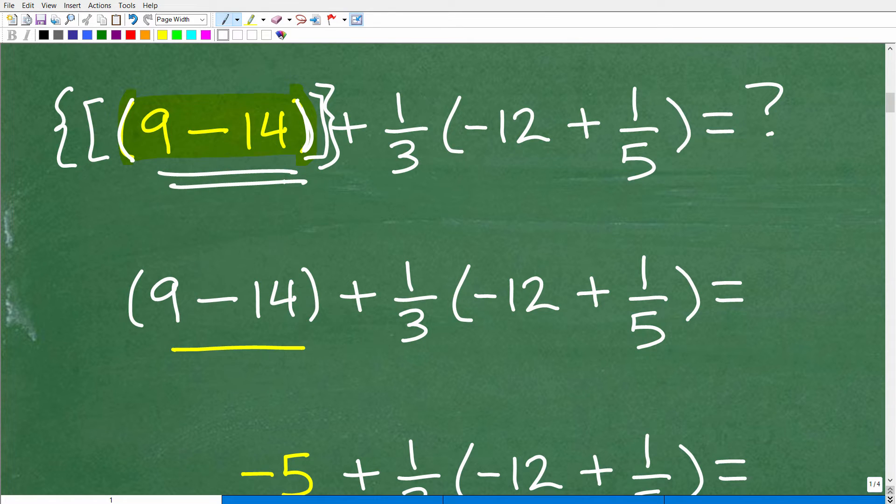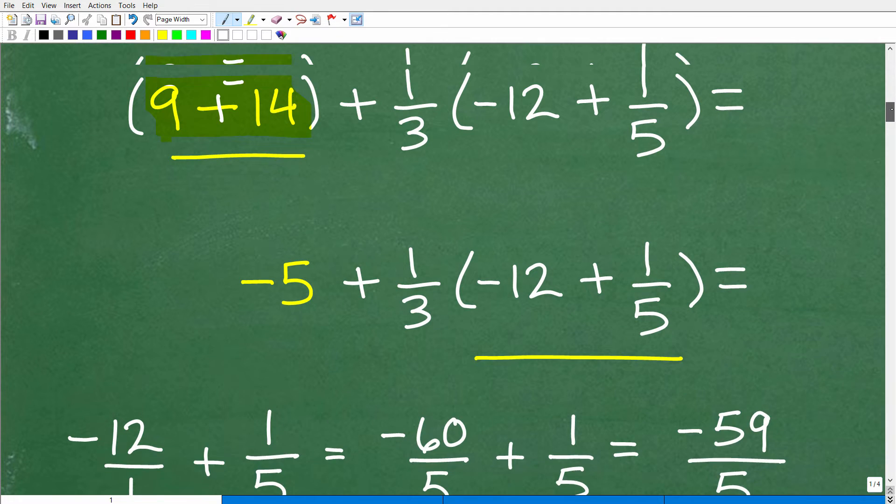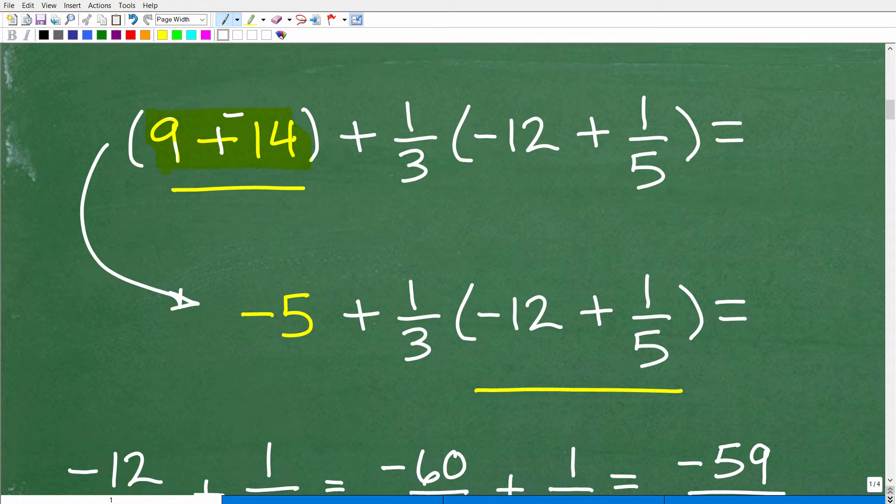So this is a group. So it doesn't just have to be parentheses. Any one of these in terms of PEMDAS, if you saw brackets, you still would have to do what's inside that group first. So we'll just take this one step at a time and figure out what 9-14 is, and then we'll come and deal with this fraction stuff in a second. So 9-14, what is the answer? Hopefully you recognize this as 9 + (-14). Of course, that will be equal to -5.